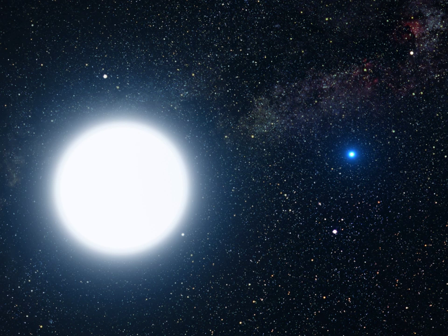Doppler surveys around a wide variety of stars indicate about 1 in 6 stars having twice the mass of the Sun are orbited by one or more Jupiter-sized planets, compared to about 1 in 16 for Sun-like stars.